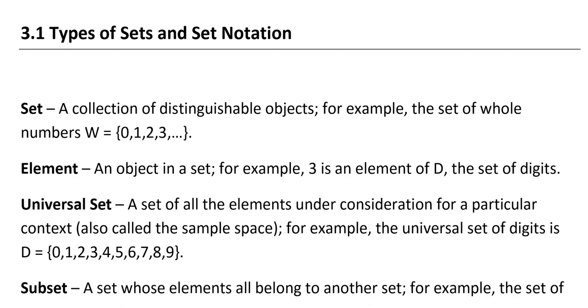You can see the definition of a set is a collection of distinguishable objects. For example, the set of whole numbers, we use a variable W, is equal to 0, 1, 2, 3. You can see that we separate the elements, or the objects, in a set by commas, and we use the curly brackets in order to hold the set.